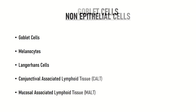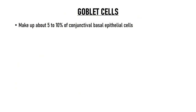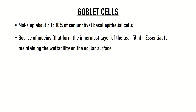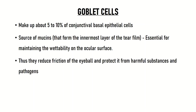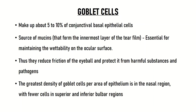Goblet cells make up about 5–10% of conjunctival basal epithelial cells. They are the source of mucins that form the innermost layer of the tear film. The tear film has three layers from outside to inside: a lipid layer, then the aqueous layer, and the innermost mucin layer — secreted by the conjunctival goblet cells. Thus goblet cells help maintain the wettability of the ocular surface, reduce friction of the eyeball, and protect it from harmful substances and pathogens. The greatest density of goblet cells is in the nasal region of the conjunctiva; they are less dense in the superior and inferior bulbar regions and almost absent at the temporal limbus. The mucin molecule they secrete is MUC5AC.